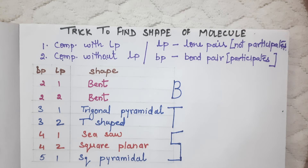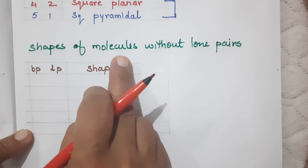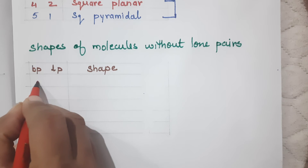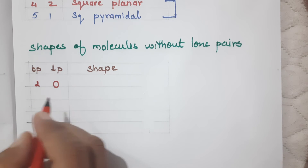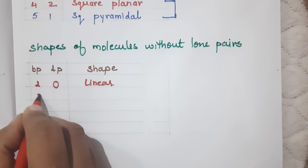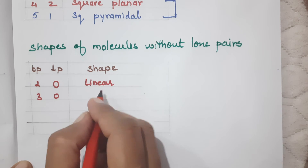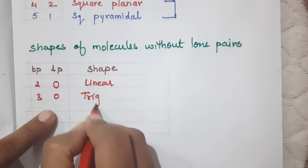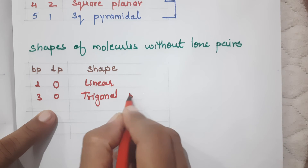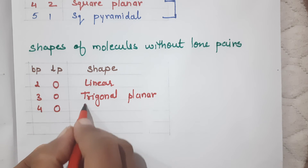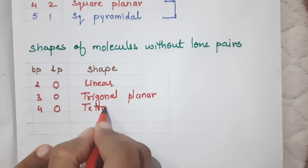Now we come to the second category: compounds without lone pairs. If the bond pair is two and there are no lone pairs, the shape will be linear. Three bond pairs and zero lone pairs gives a trigonal planar shape. Four bond pairs and zero lone pairs gives a tetrahedral structure.